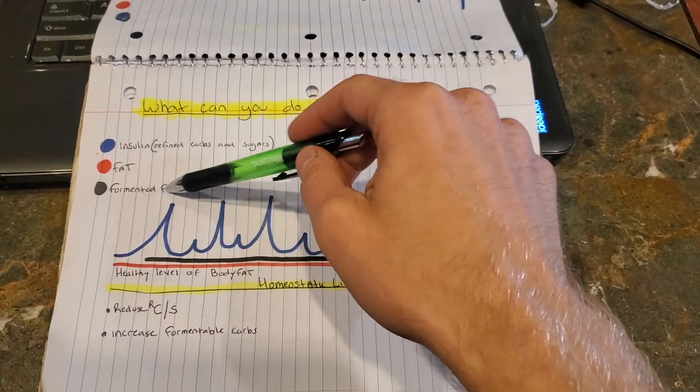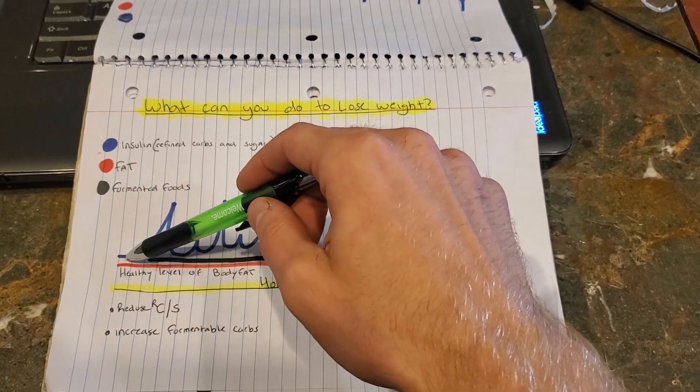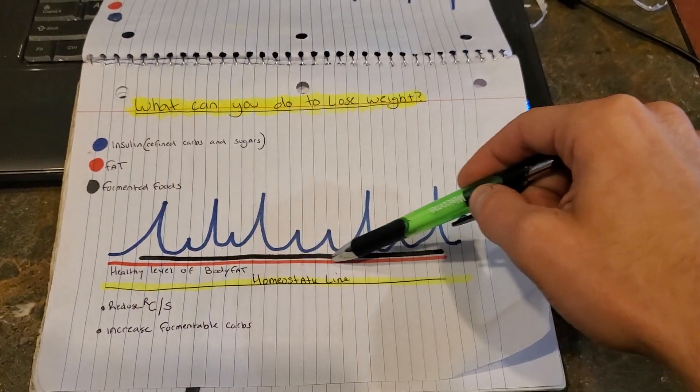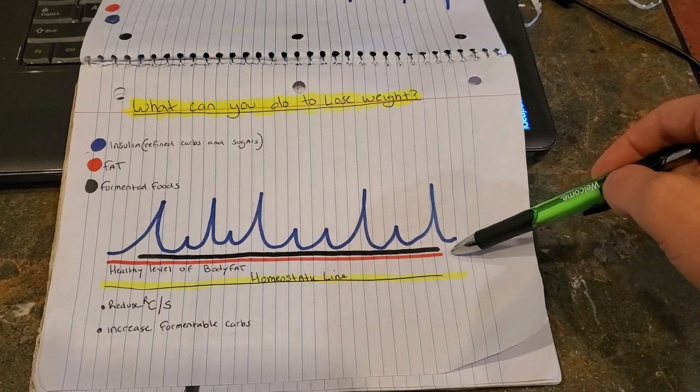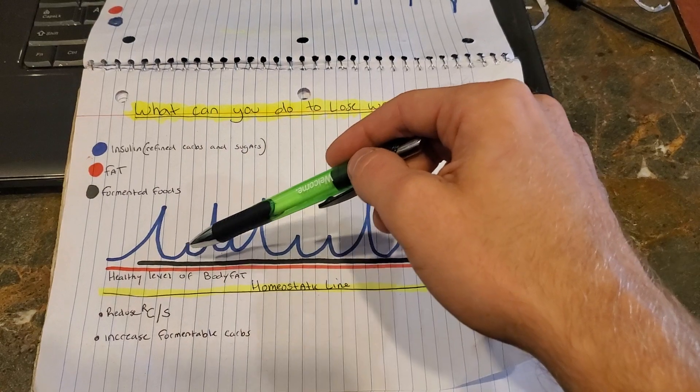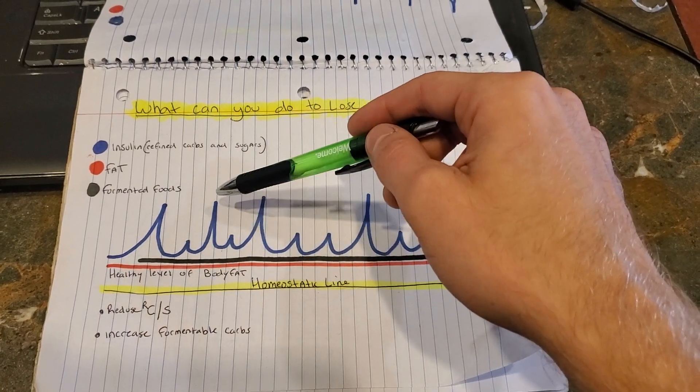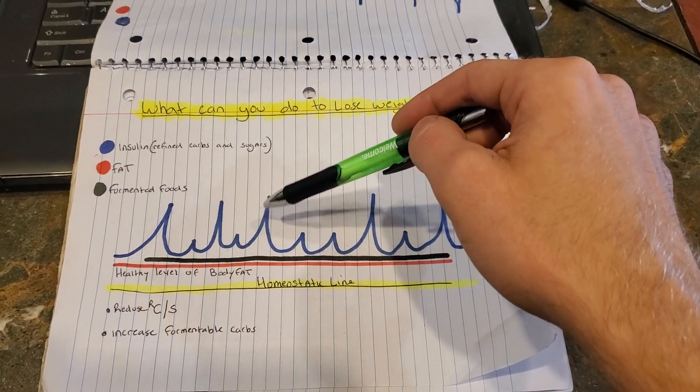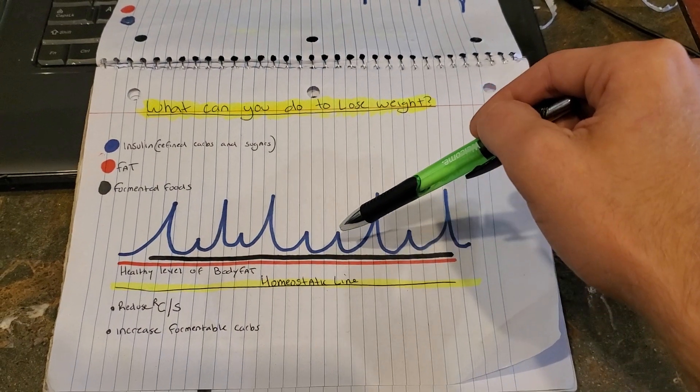Over here, you have fermented foods. These do not spike your insulin as much and they keep you closer to your healthy level of body fat because your body is using those rather than having to suffer from an insulin spike, blocking lipolysis, not being able to burn the body fat, and functioning in a slower, less metabolic state.